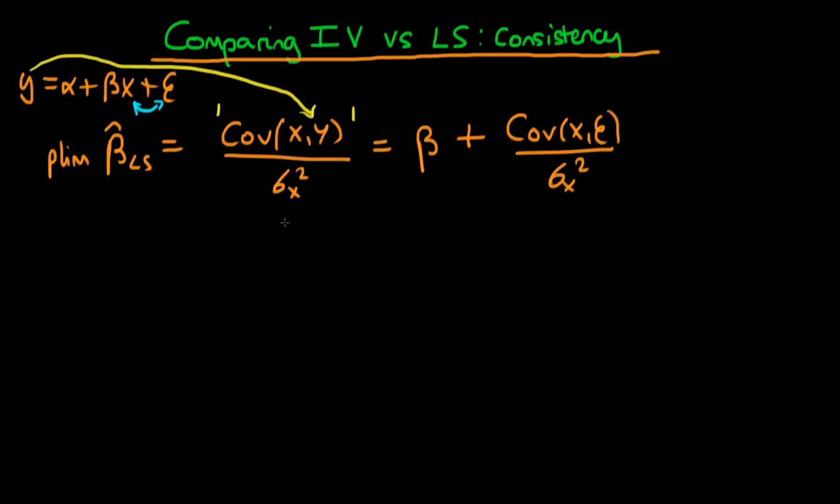Okay so that's the probability limit of beta hat least squares. I'm actually going to use a little trick to simplify this a bit by just introducing what we mean by the correlation of x and epsilon.